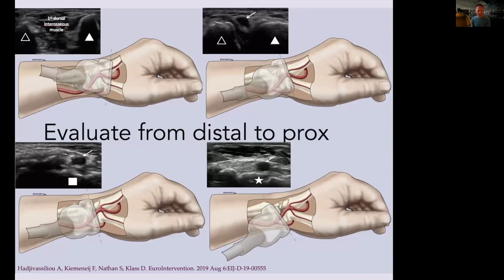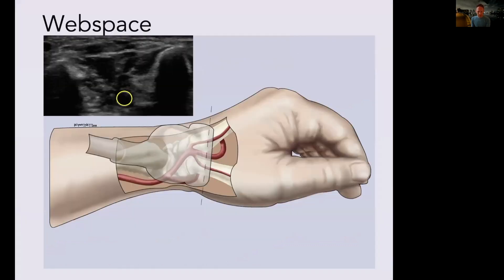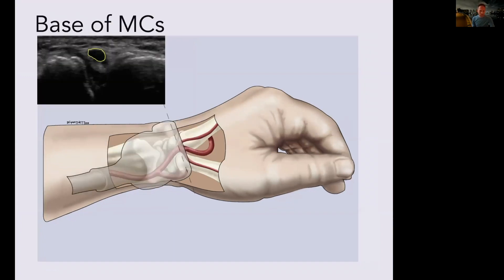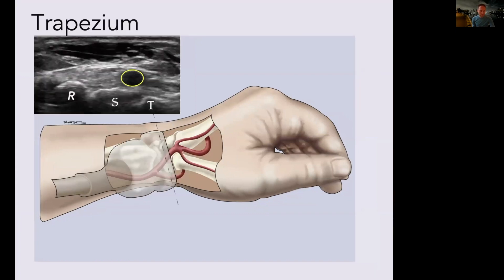We'll go through the landmarks step by step. This has all been published in a paper in EuroIntervention — it's free to download as a reference. The first web space: the artery is very deep with no bone underneath to support hemostasis, so avoid puncturing here. Many operators who don't use ultrasound tend to puncture here rather than more proximal. Avoid the base of the metacarpals. The ideal site is over the trapezium and scaphoid — you can see local anesthetic is already in. You are often much more proximal than you think.